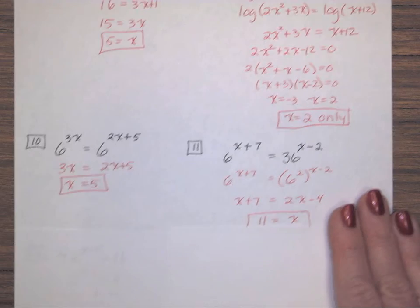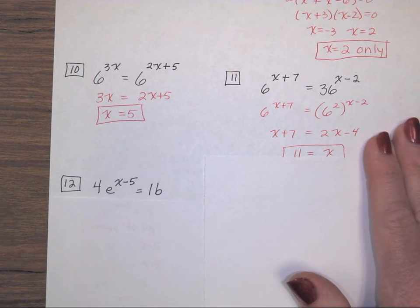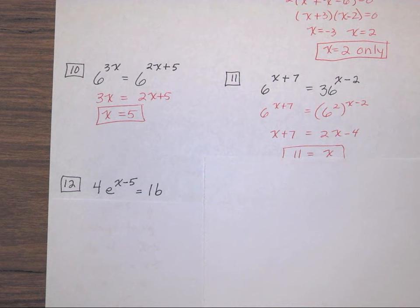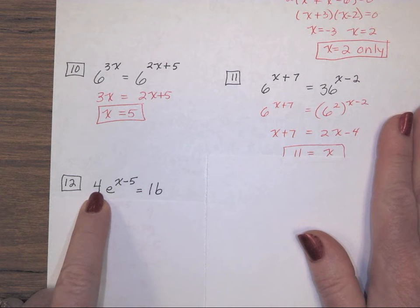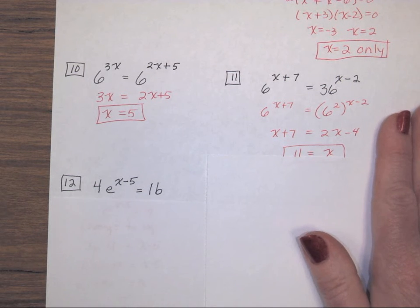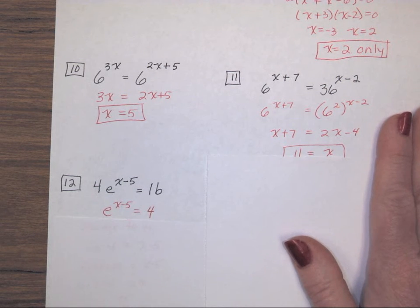Number 12. I have 4 times e with an exponent of x minus 5 equals 16. I must get rid of this 4 before I do anything else. It's being multiplied, so I divide by 4 on both sides. It cancels on the left, and 16 divided by 4 is 4.